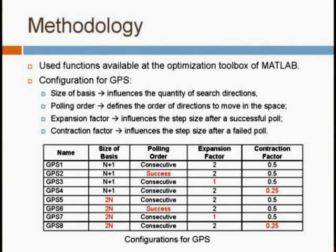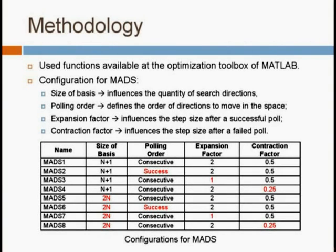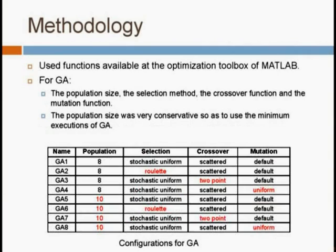We used different configurations for each method. For GPS, we changed the size of the basis, the polling order, the expansion factor, and the contraction factor. We did the same for MADS. For GA, we changed the population, the selection method, the crossover function, and the mutation function. It is important to note that we used a very conservative population size — 8 and 10 — which is not common, but was used to keep the minimum number of executions for GA.